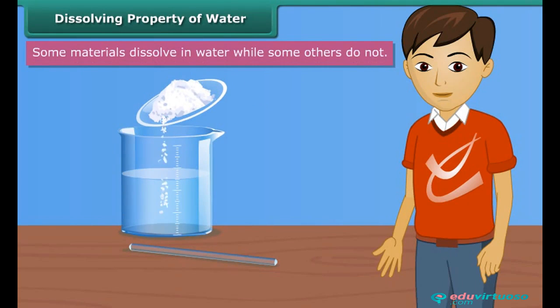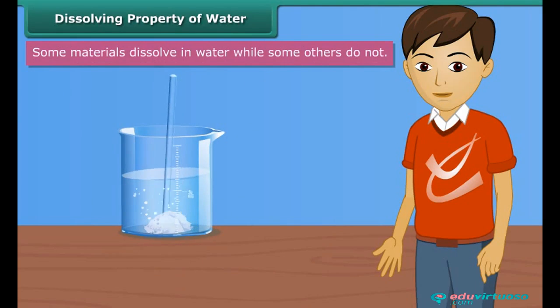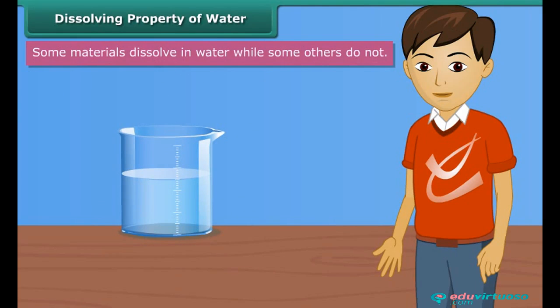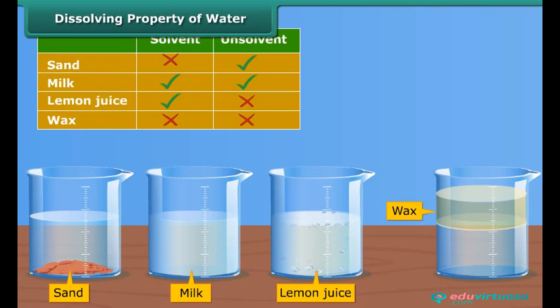Water is a universal solvent. It dissolves many things, but there are certain items that do not dissolve in water. Collect sand, milk, lemon juice and wax, and also take some sugar and salt. Try to dissolve these materials in water separately. Make a table of your observations and compare your observation table with the table shown on screen.